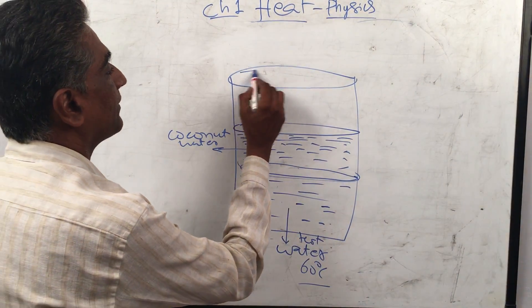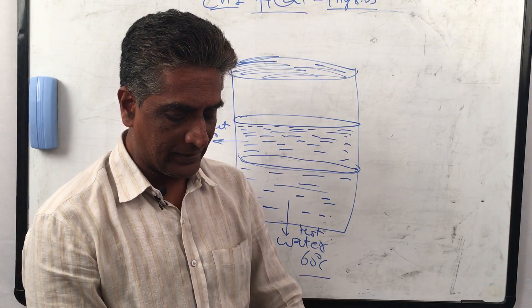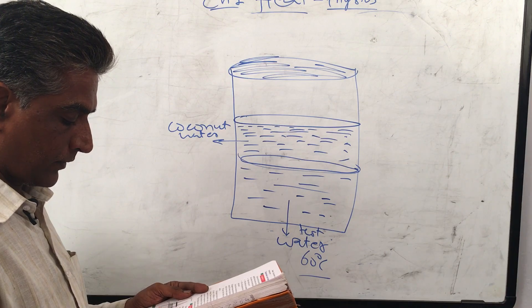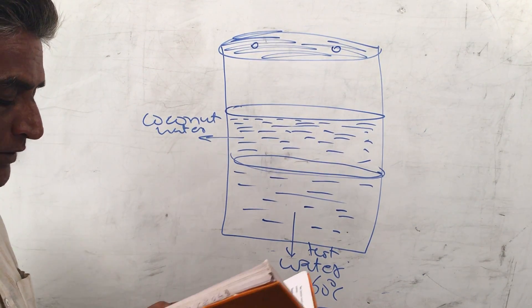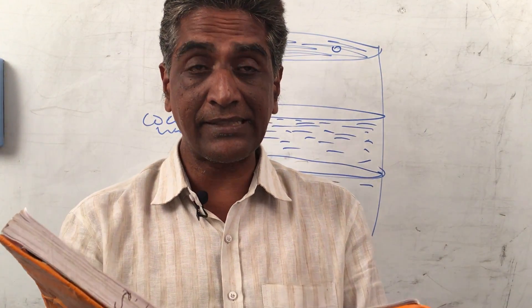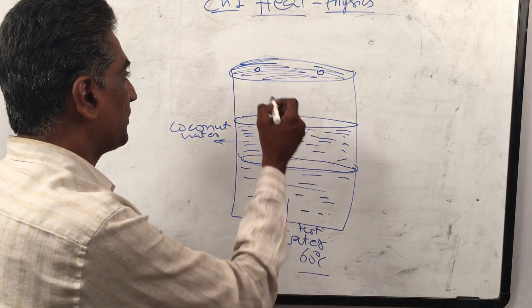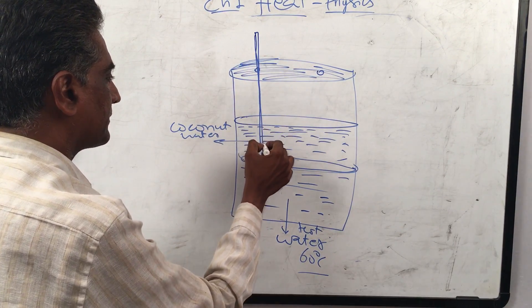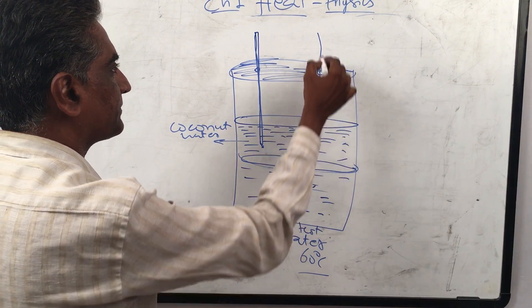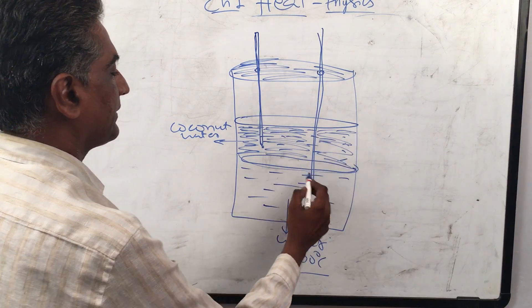Put a lid with two holes on the top of the glass jar. Take two thermometers and insert them through the holes of the lid such that the bulb of one thermometer lies only inside the water and the other lies only inside the coconut oil, as shown. So this thermometer is in water and this one is in coconut oil.